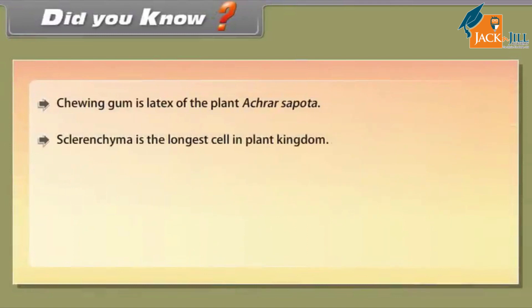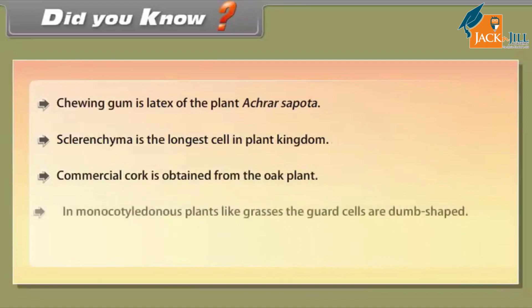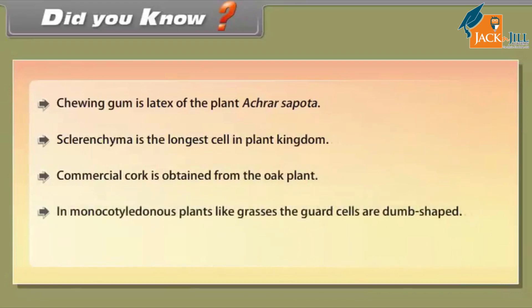Did you know: Chewing gum is the latex of the plant Achras sapota. Sclerenchyma is the longest cell in the plant kingdom. Commercial cork is obtained from the oak plant. In monocotyledonous plants like grasses, the guard cells are dumbbell-shaped.